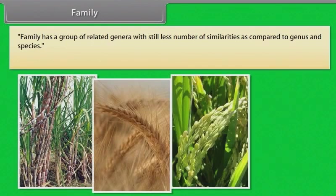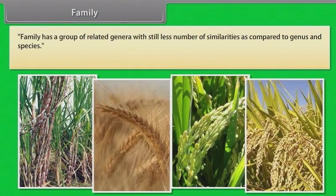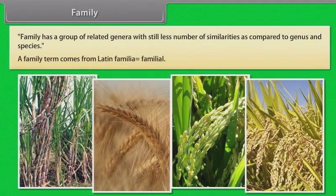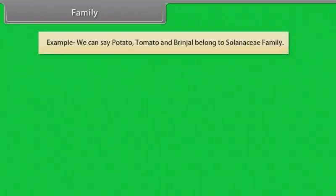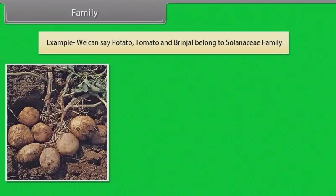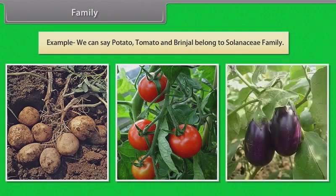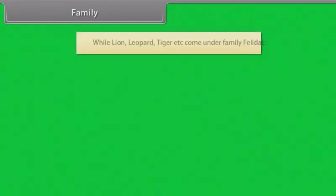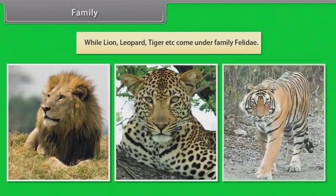Family has a group of related genera with still fewer similarities as compared to genus and species. The term family comes from Latin familia, meaning familial. For example, potato, tomato, and brinjal belong to the Solanaceae family, while lion, leopard, tiger, etc. come under the family Felidae.